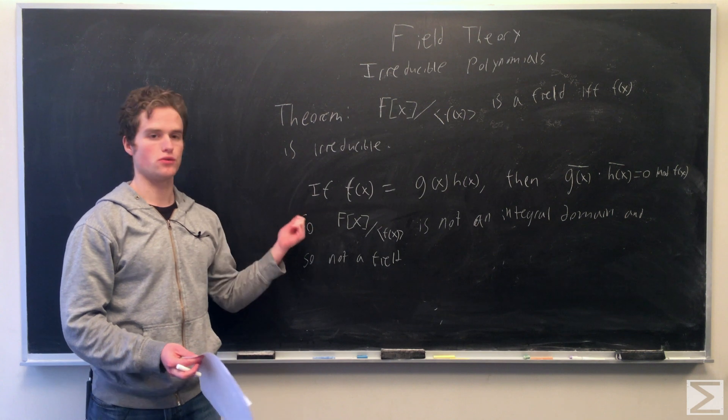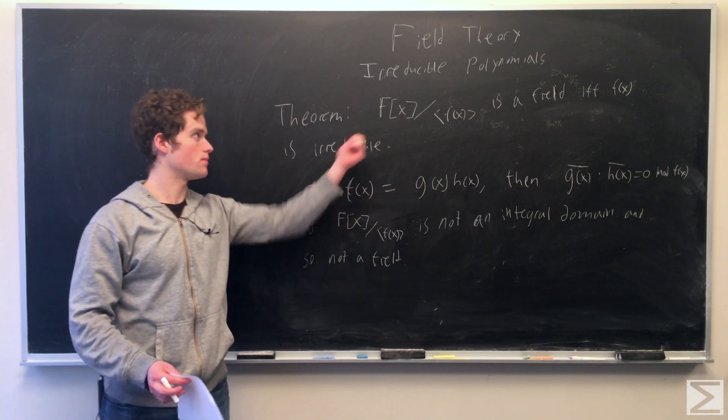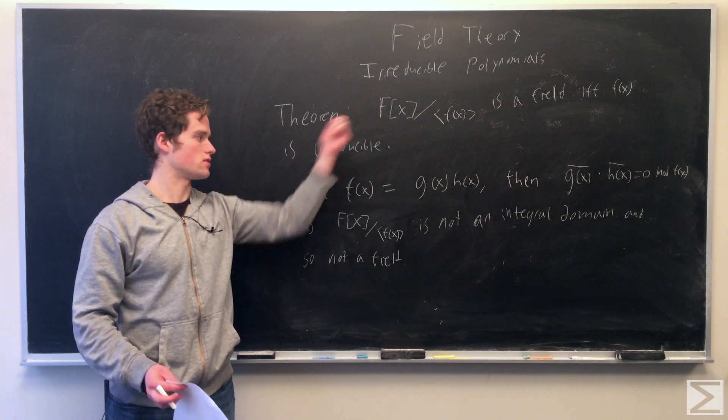So one direction, if f of x is reducible, so we can say f of x equals g of x h of x, where g of x and h of x are both in the ring of polynomials with coefficients in F.